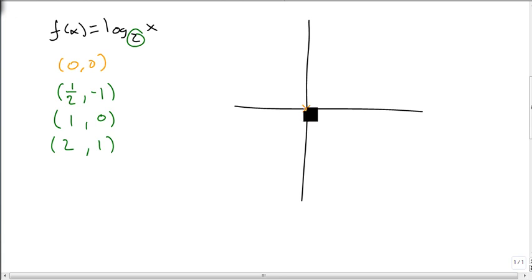We then go over 1. Straight over 1 and up nothing. We go over 2 and up 1. And we go over a half and down 1. And we get our graph that does this.